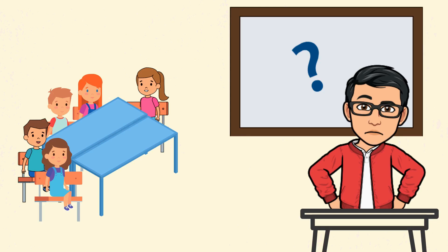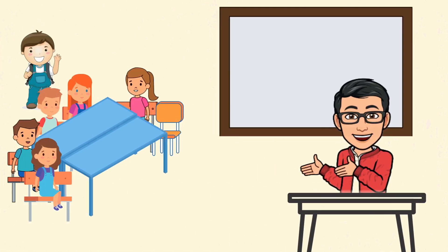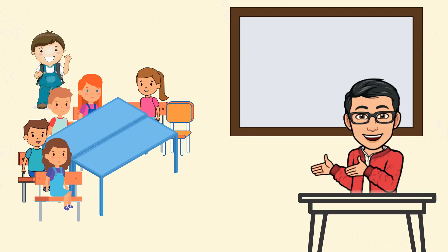Mr. J will have his lesson in math. He wanted to ask students to work in pairs, but he realized that there are only five students in his class. Oh no! Someone will be left out. Mr. J decided to change his plan, but suddenly another student came. Yay! There are six students and no one will be left out. They can now work in pairs.